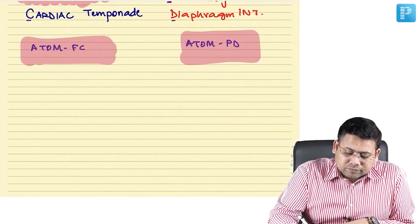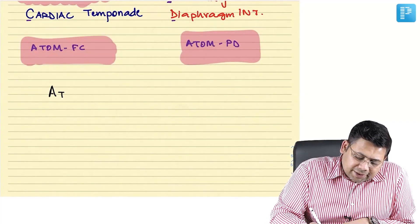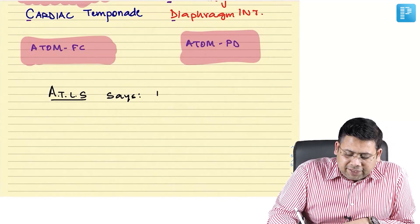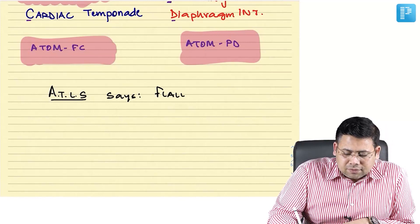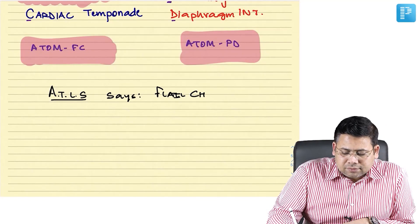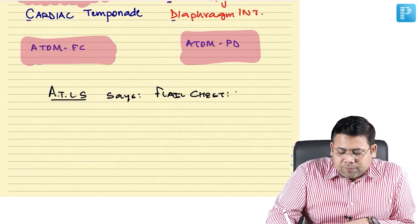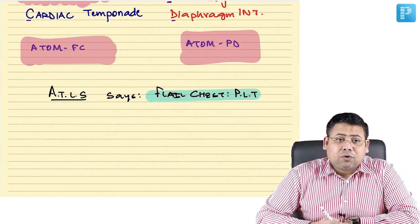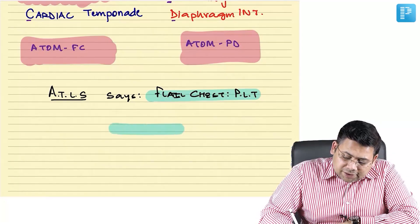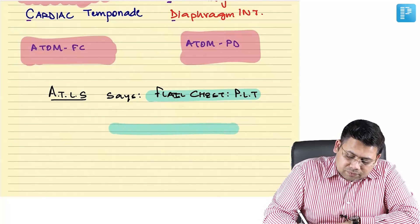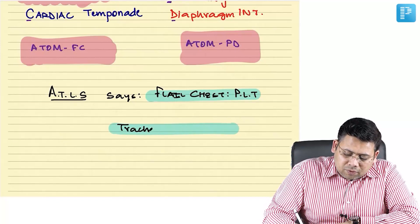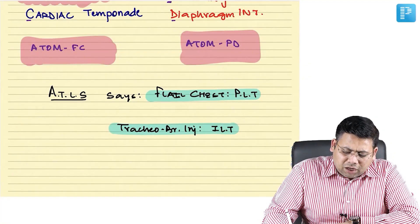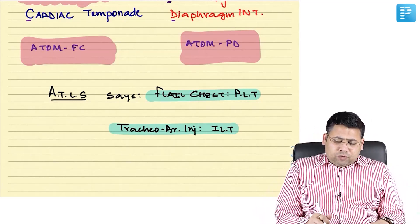The controversy: ATLS says that flail chest is PLT — potentially life threatening — not ILT. ATLS also says that tracheobronchial injury is ILT — immediately life threatening. This differs from the UK school of thought, which we will address.